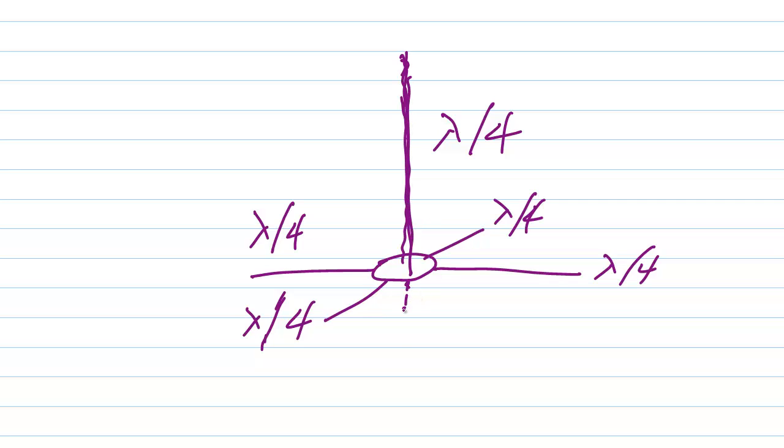You connect the center conductor of your coax, your coaxial cable, to the vertical radiating element, and you connect the shield of your coax to the radial system.